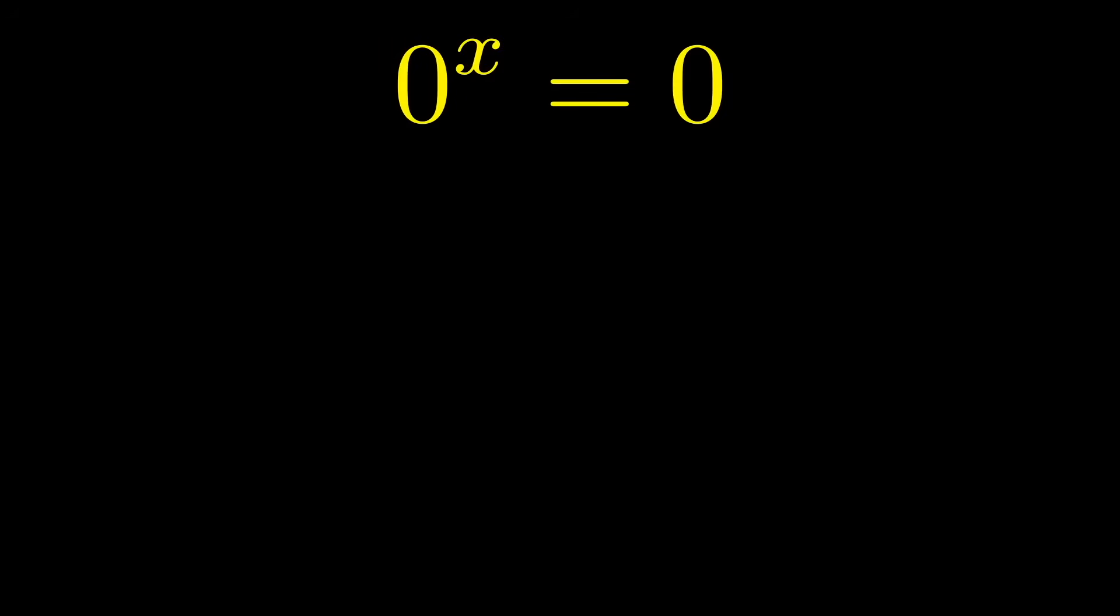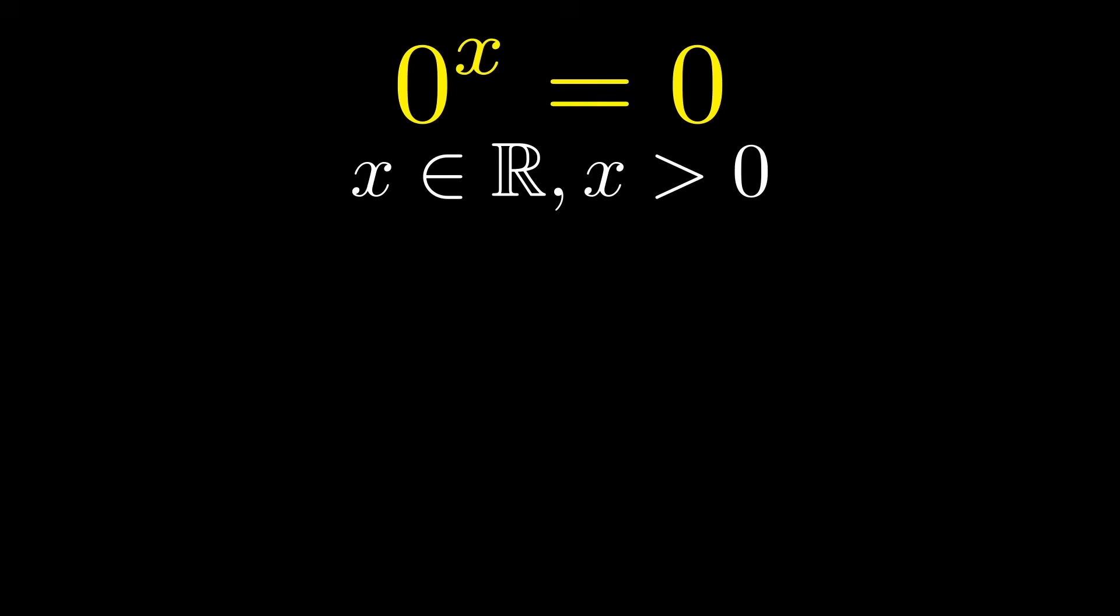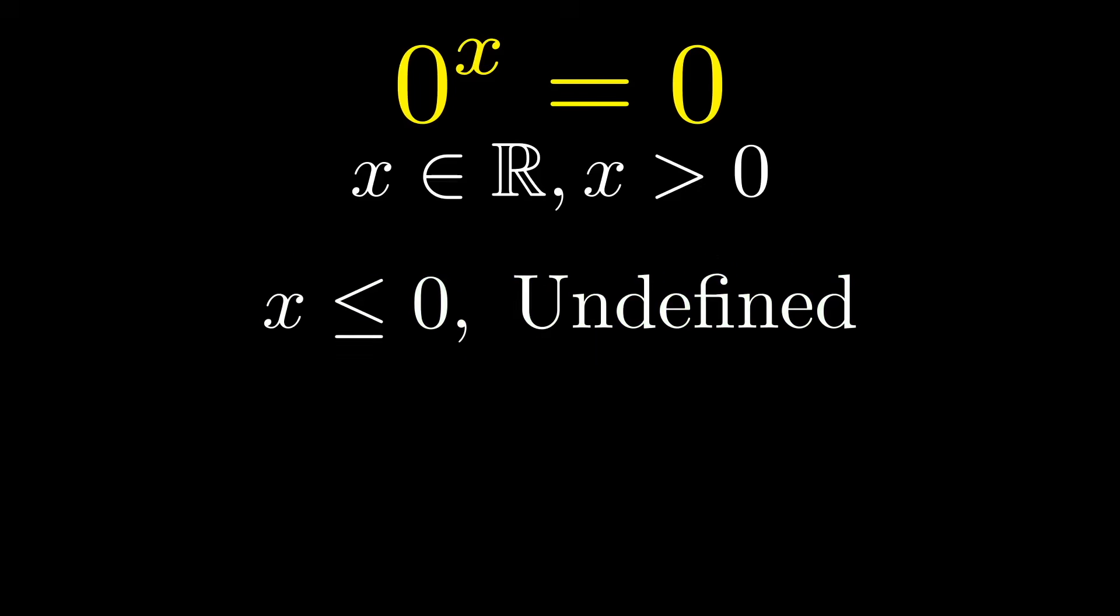Traditionally, we think any power of zero is zero, and while that's often true for the equation 0^x, this is really only true for real values of x larger than zero. If x equals zero, it's traditionally undefined, unless you're someone like me who thinks that this is one. And if x is less than zero, it's definitely undefined.